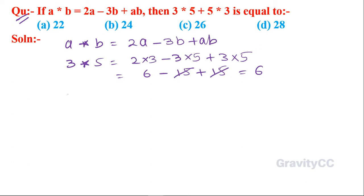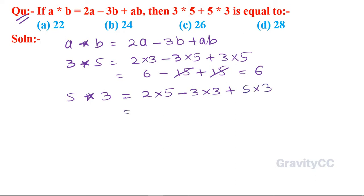And 5 asterisk 3 is equal to 2 into 5 minus 3 into 3 plus 5 into 3, which is equal to 10 minus 9 plus 15, so equal to 25 minus 9, which is equal to 16.